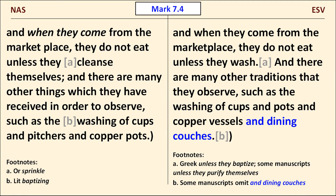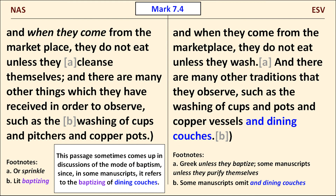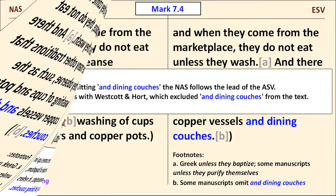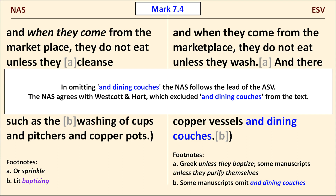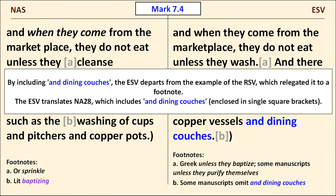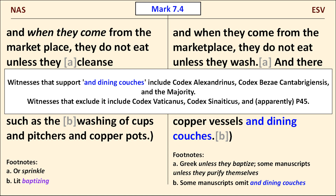Our first example is from Mark 7:14, where there is a striking difference at the end of the passage. The ESV talks about washing dining couches, and the NAS does not. As the NAS footnote shows, the word translated as 'washing' is actually 'baptizing' — so this passage comes up in discussions of the mode of baptism. By omitting 'and dining couches,' the NAS follows the ASV and agrees with Westcott and Hort's 19th-century Greek New Testament, disagreeing with NA28. The ESV includes 'and dining couches,' disagreeing with its predecessor the RSV, which relegated it to a footnote. The ESV translates the NA28 in this passage.